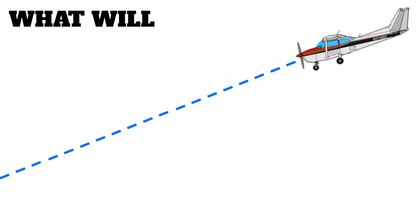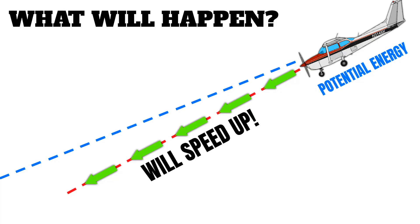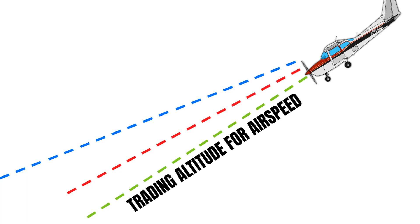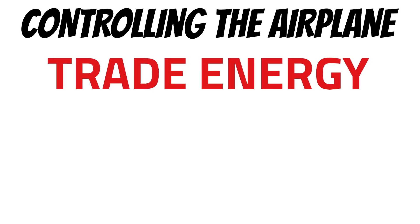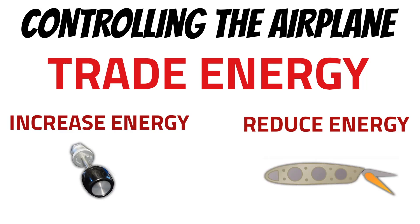Now you know half of what it takes to control your airplane when you're descending towards a runway. If you pitch down and try to lose altitude, you're going to trade potential energy for kinetic energy — in other words, the airplane will speed up. So pitching down will gain airspeed because you're trading altitude for airspeed. The other way to control the airplane is to increase or reduce our energy, and we have two tools for that: thrust and drag. Thrust gives us the ability to speed up or gain kinetic energy, and drag gives us the ability to slow down or bleed off kinetic energy.